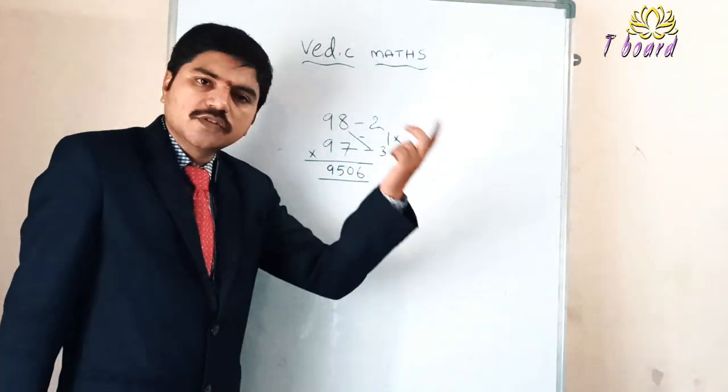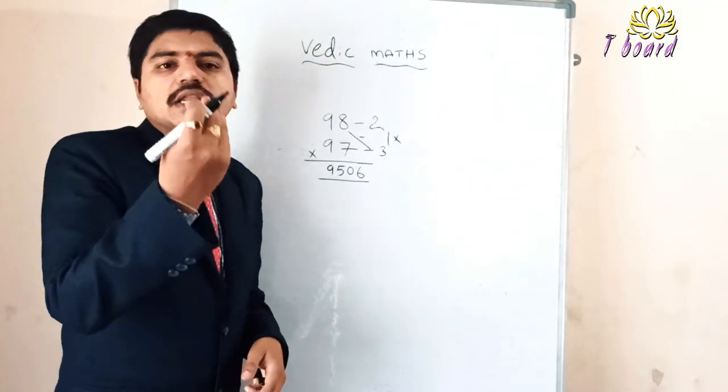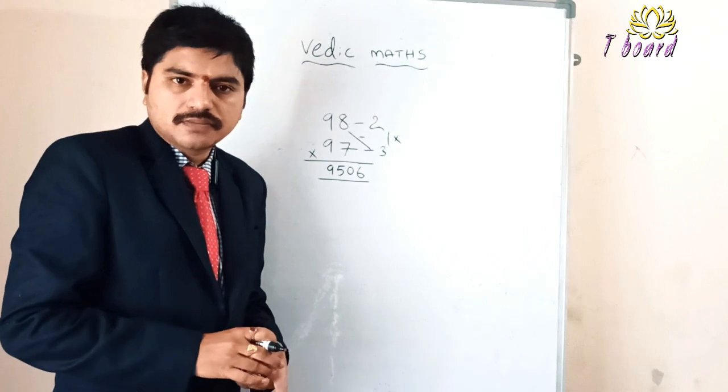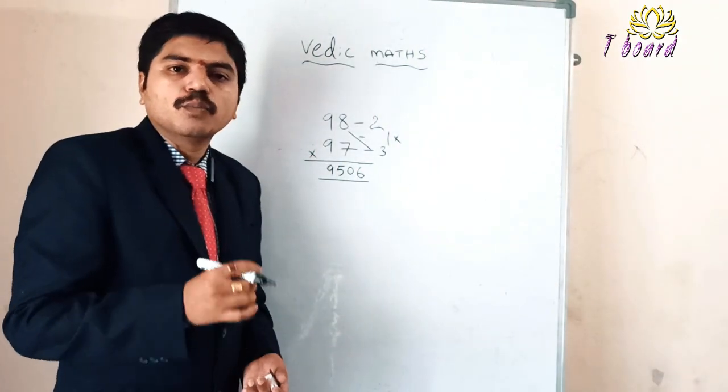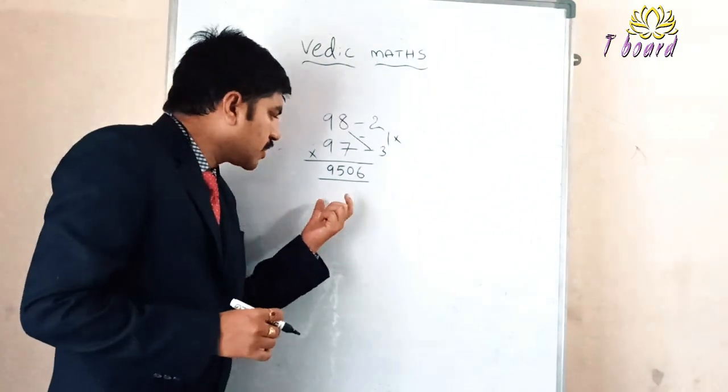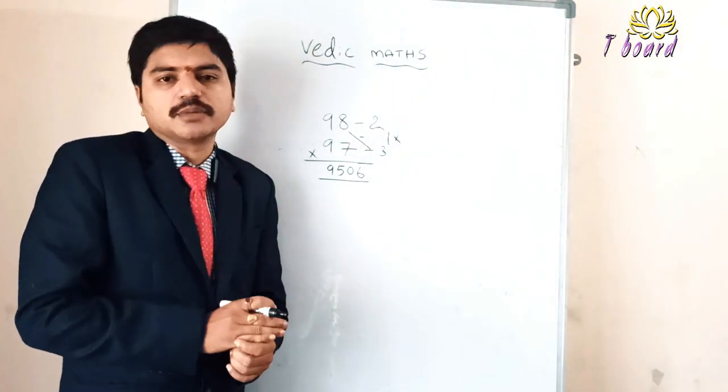0 6. See how simple we can do it. 9506. If you multiply 98 into 97 in our using traditional mathematics also, it takes some time, as a fraction of minutes. But it is a fraction of seconds. So that is the beauty of the Vedic mathematics.